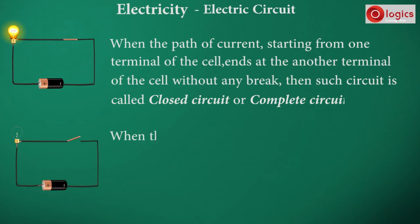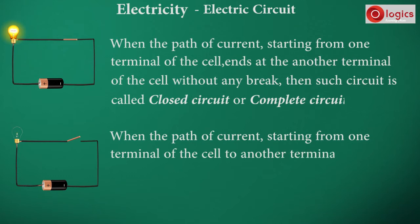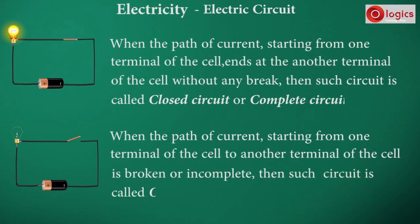When the path of current starting from one terminal of the cell is broken or incomplete, then such a circuit is called an open circuit or incomplete circuit.